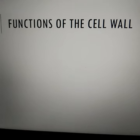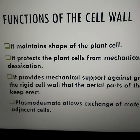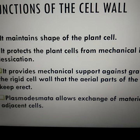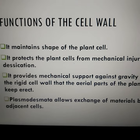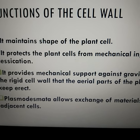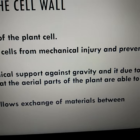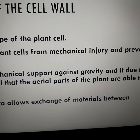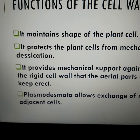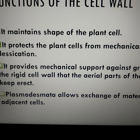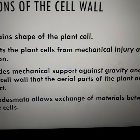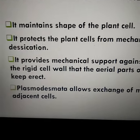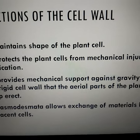Coming to the functions of the cell wall: the cell wall maintains the shape of the cell. It protects the plant cells from mechanical injury. It gives mechanical support against gravity. It is due to this cell wall that aerial parts of the plant are able to keep erect. And the plasmodesmata within the adjacent plant cells allow exchange of materials between the cells.